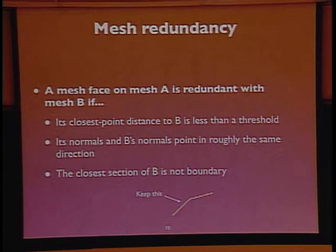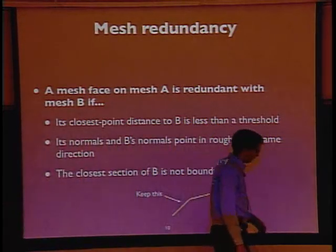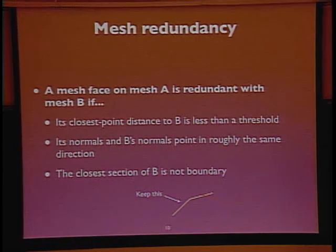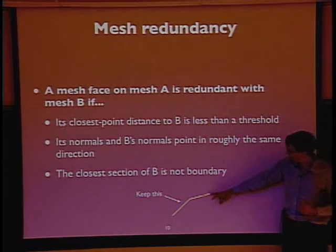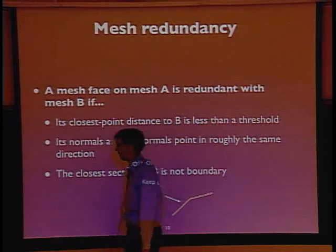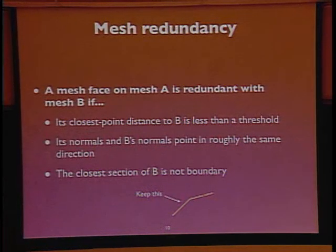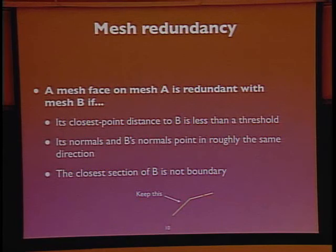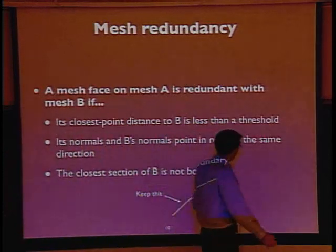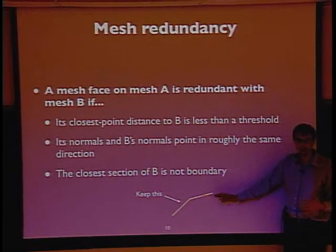How do you determine whether a mesh face or segment is redundant? One approach: if a particular face has a very small closest-point distance to another segment, assume it's redundant. Furthermore, if its surface normals are nearly identical to that closest segment, it also appears redundant. And it can't be part of the boundary — where the object stops. This basically says: if two distinct parts of the surface representation look a lot alike, one of them is redundant.